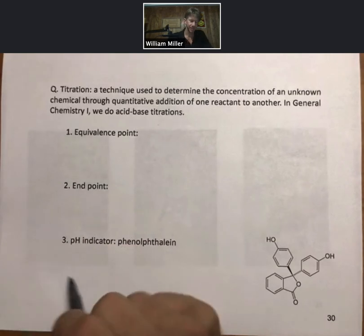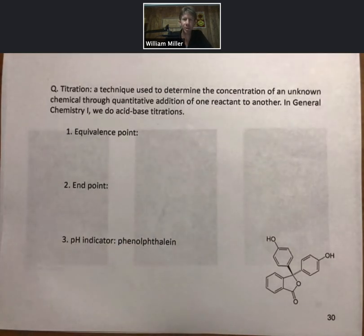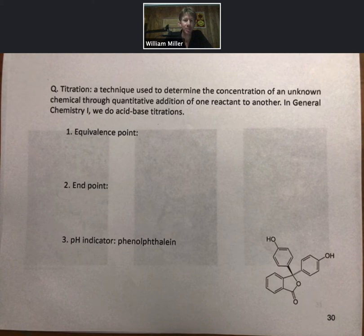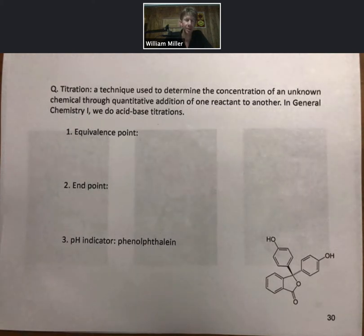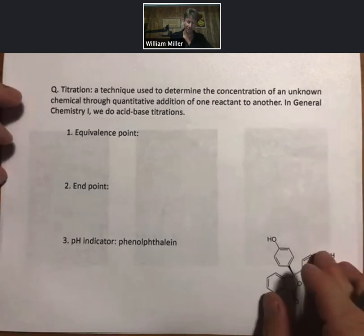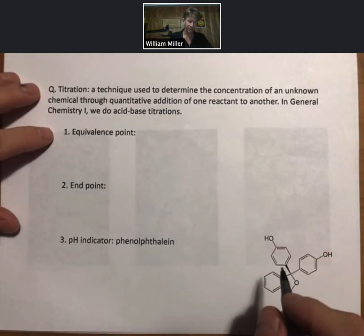Now let's talk about titration. It is a technique used to determine the concentration of an unknown chemical through quantitative addition of one reactant to another. In this course we do acid-base titrations, and there are other titrations that are possible too.